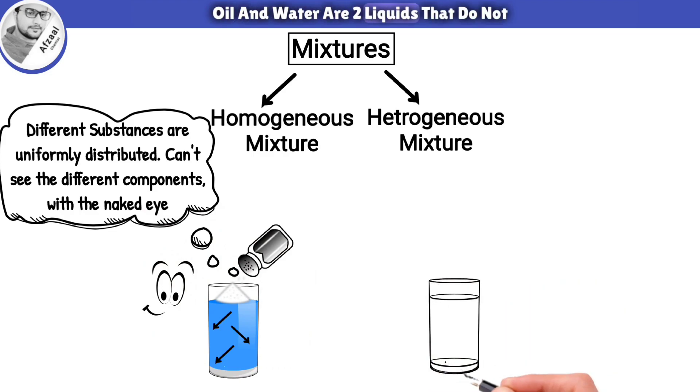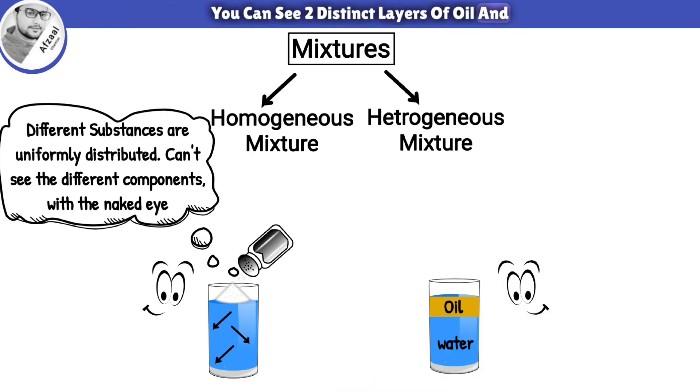On the other hand, oil and water are two liquids that do not mix well. They form a heterogeneous mixture because they have different densities and polarities. You can see two distinct layers of oil and water.